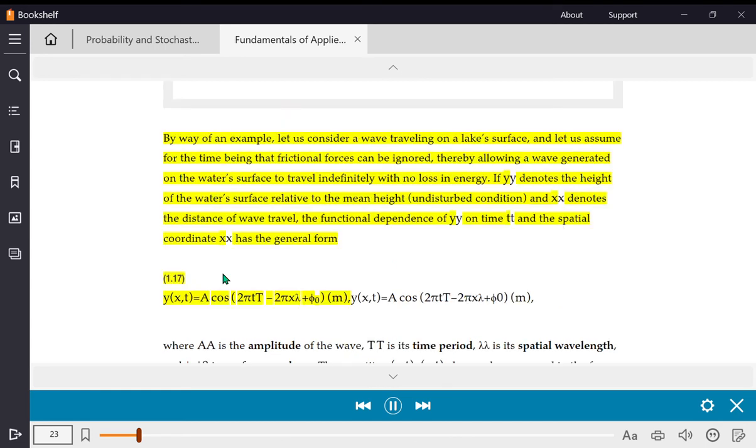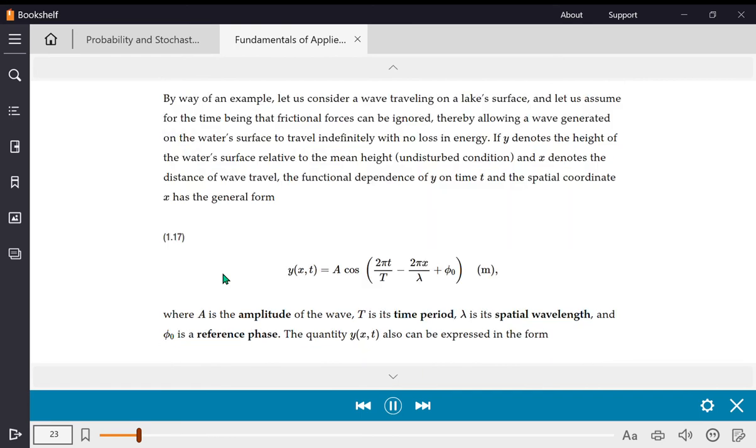Y of X, T equals A cos of 2 pi T over T minus 2 pi X over lambda plus phi naught. Equation 1.17.